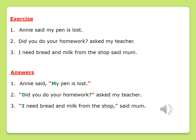Let's look at the second sentence: "Did you do your homework?" asked my teacher. What words came out of the teacher's mouth? "Did you do your homework?" — which should be placed within red quotation marks. We do not have a comma in this sentence, boys and girls, simply because the sentence ends with a question mark. And last but not least, we have a capital letter D for the word 'did.'